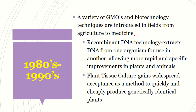In the 1980s, GMOs were improving and we had a variety of them. Various biotechnological techniques were growing in agriculture — for example, recombinant DNA technology, where we extract DNA from one organism to use it in another, allowing for more rapid and specific improvements in plants and animals.